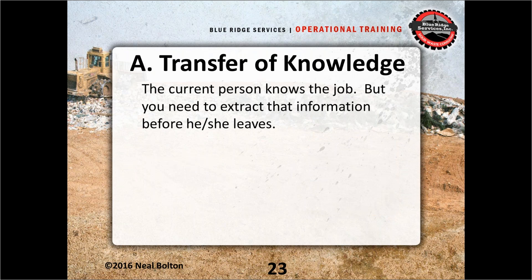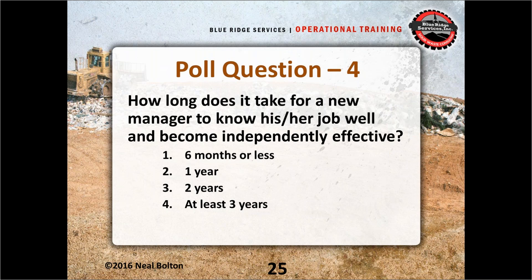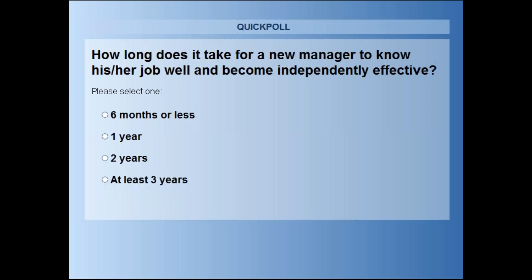How long did it take for you to know your job well, and how long will the next person take to learn it? Our poll asks: how long does it take for a new manager to know his or her job well and become independently effective? Options are six months or less, one year, two years, or at least three years.